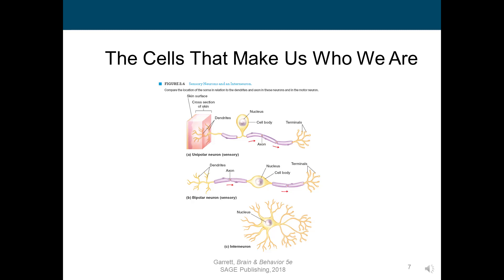Notice that this interneuron is multipolar but the axon appears to be missing, and that's the case for some interneurons. The reason is that interneurons make connections over very short distances, so they do not need the long axons that characterize motor and sensory neurons. Down here in figure C you'll see the interneuron, and it doesn't appear to have an axon because interneurons communicate over such short distances that a long axon is not needed.